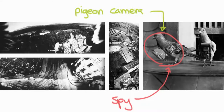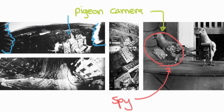They were trying to get reconnaissance pictures so they could make battle plans. You can see the pigeon's little wings coming into the frame in one picture as he's flying over a really cool castle. You can also see the lens was a very wide angle.